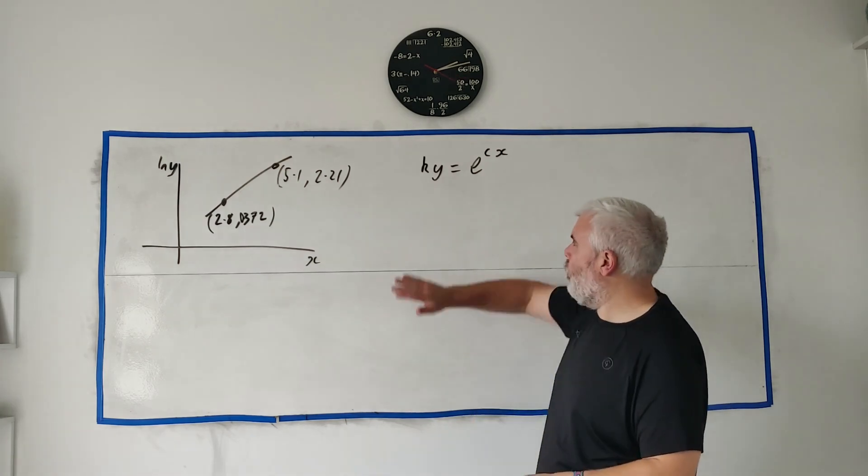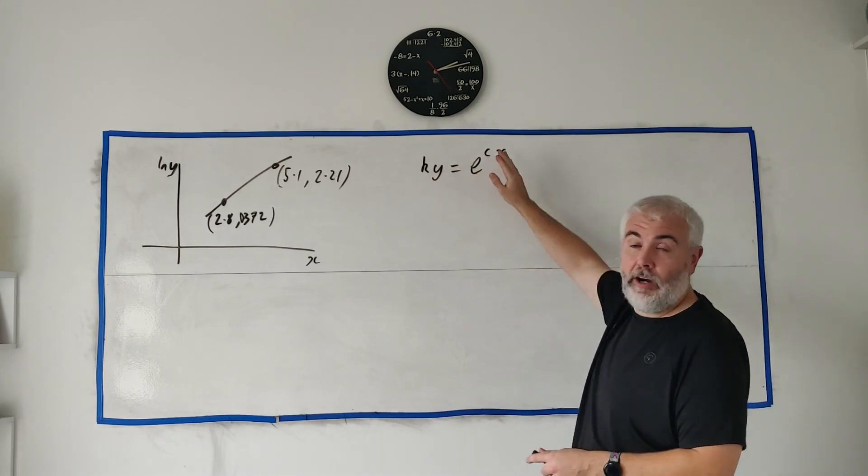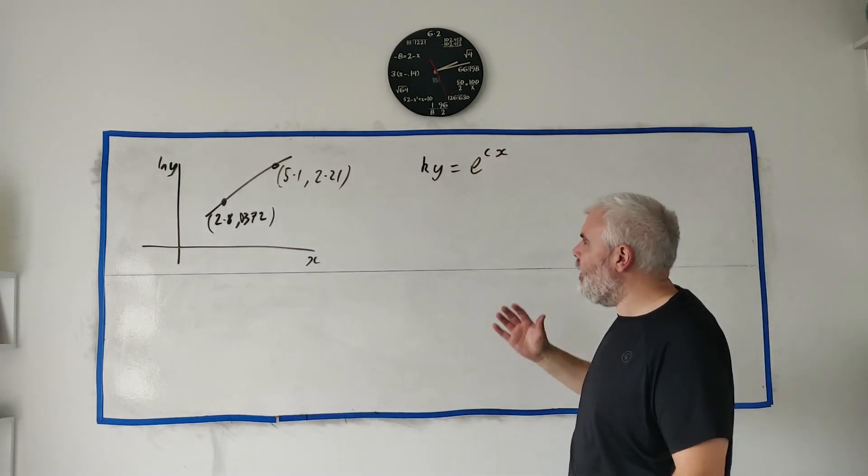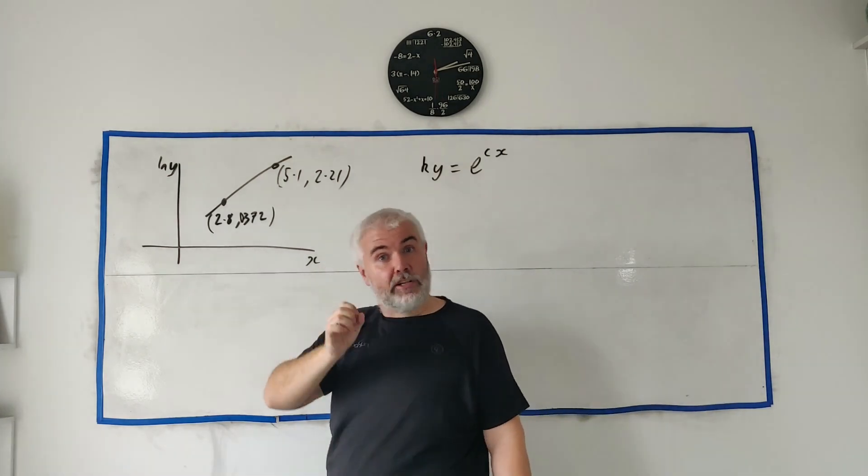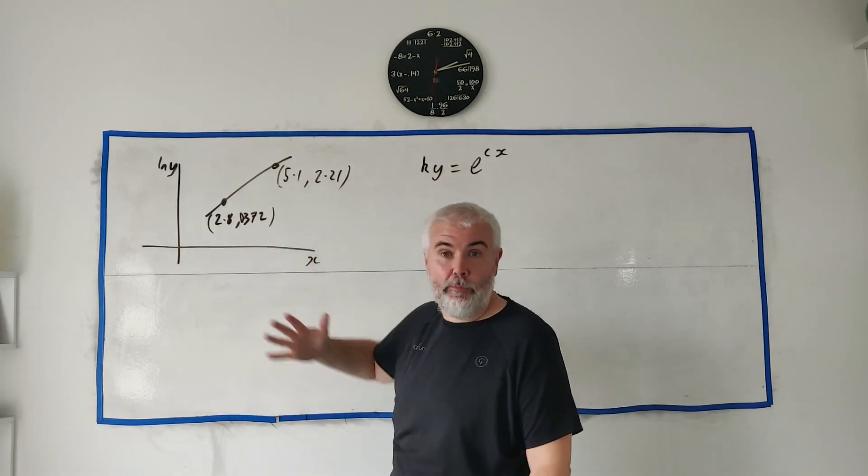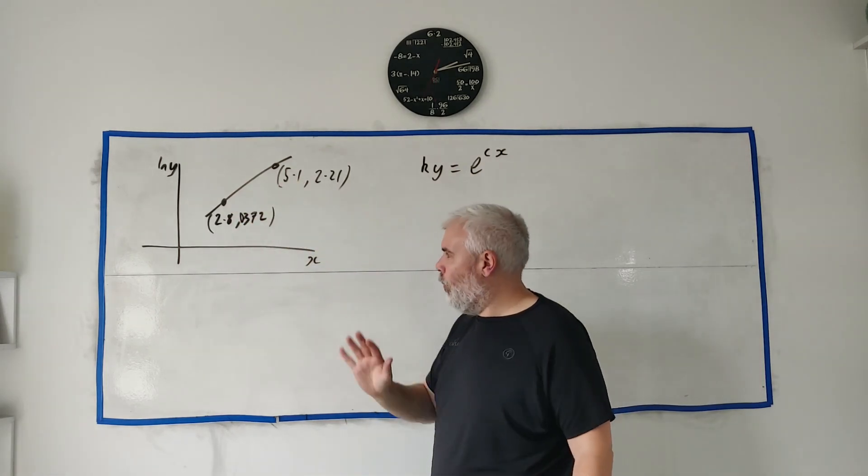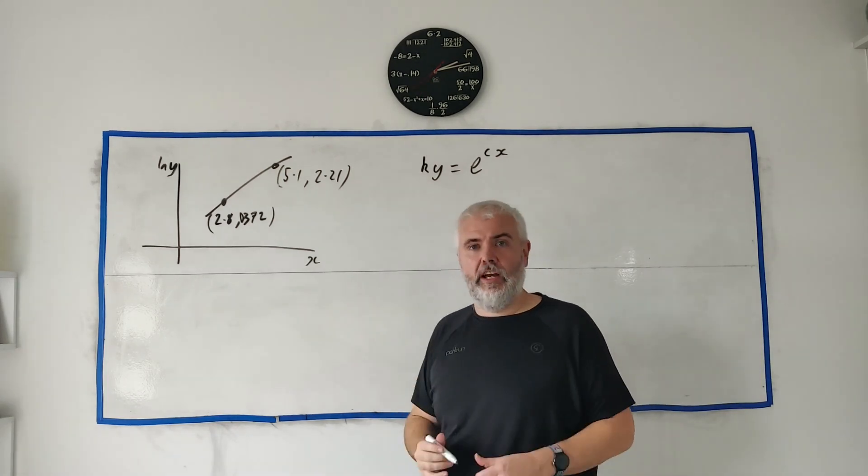They start off by telling us about an equation that looks like this: k times y equals e to the power of cx. Then they tell us if we graph that with x versus natural log y, we'll get a straight line that has these two points on it. That's quite important—a straight line.